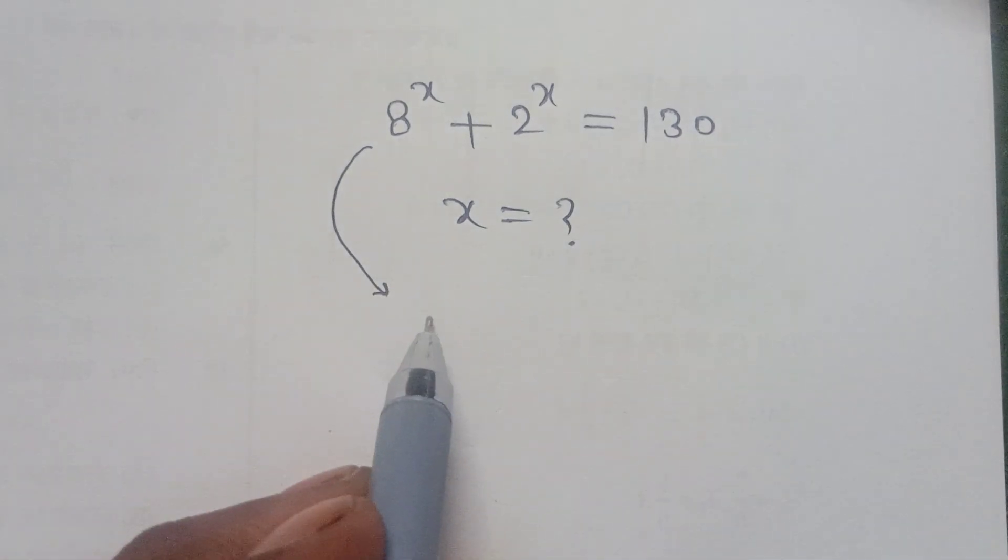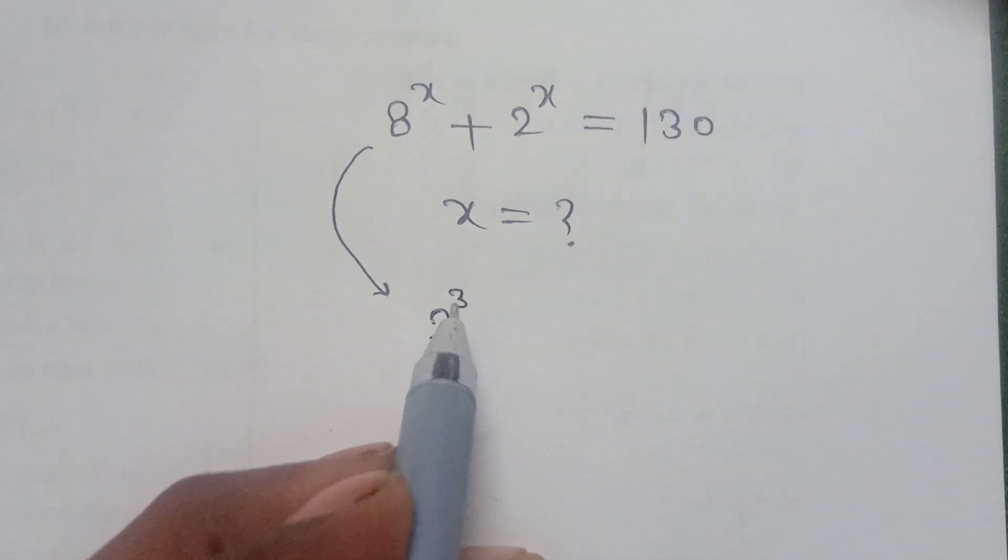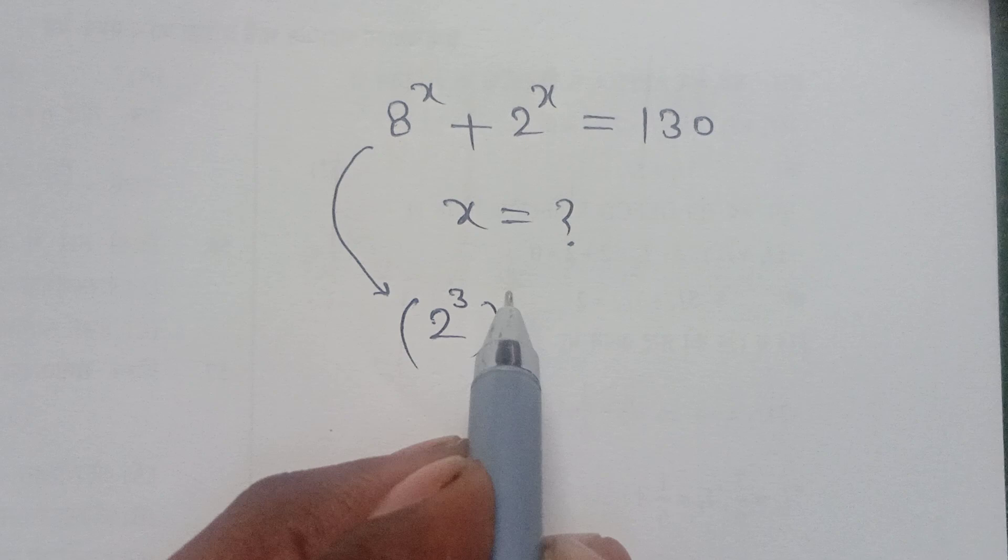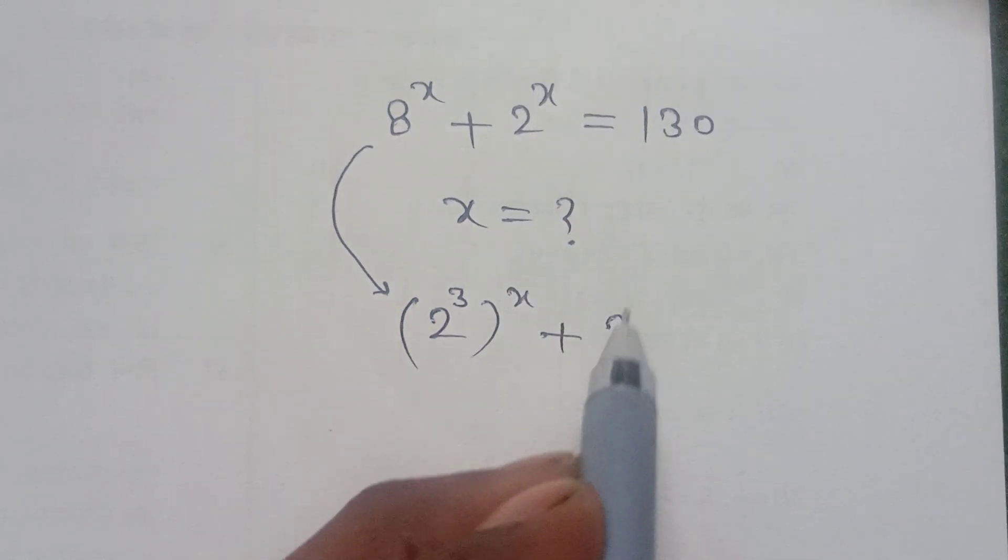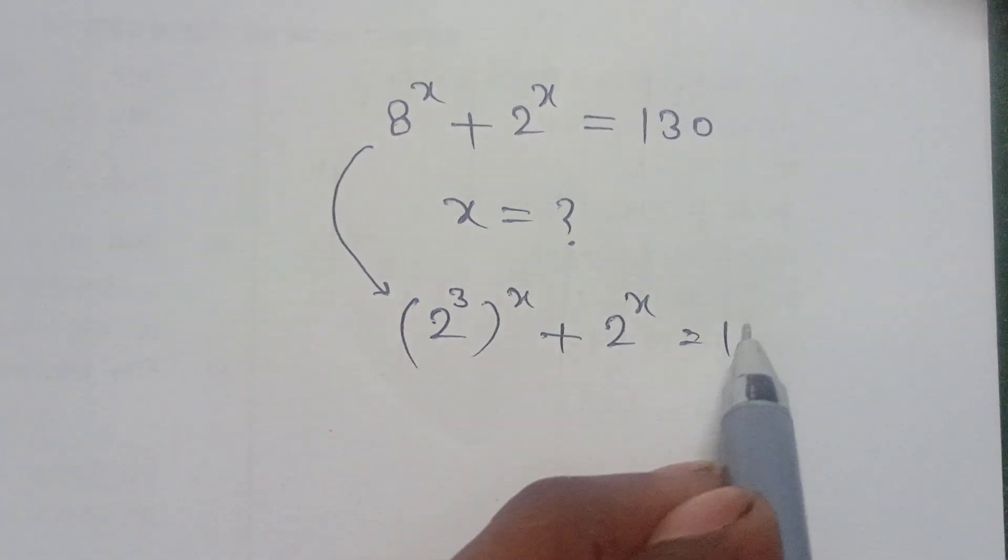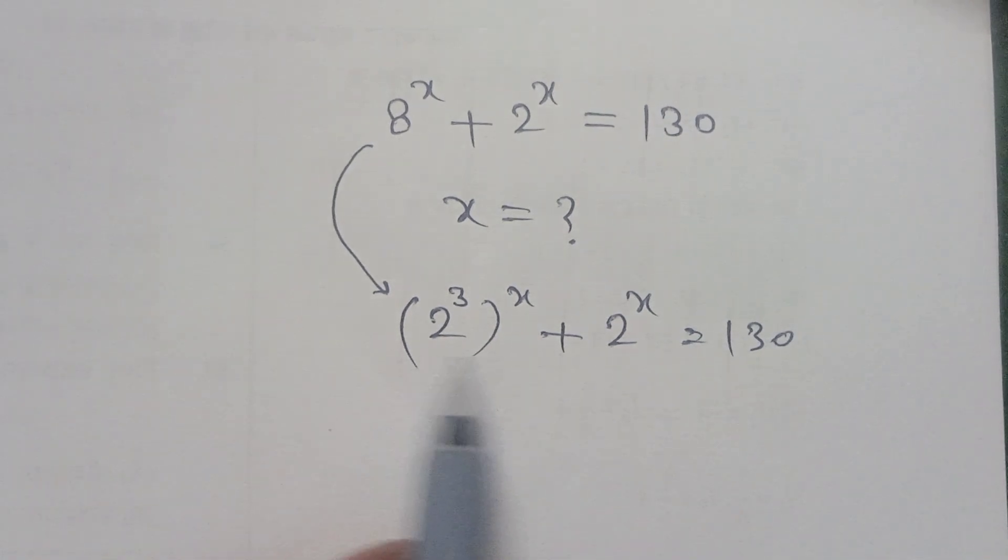You can write this as 2 to the power 3, so 2 to the power 3x plus 2 to the power x is equal to 130.